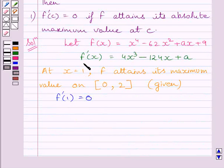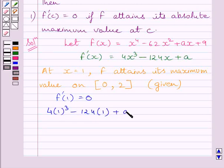Now substituting 1 for x in this expression, we get the value of f'(1). So f'(1) is equal to 4 multiplied by 1 cubed minus 124 multiplied by 1 plus a equal to 0.